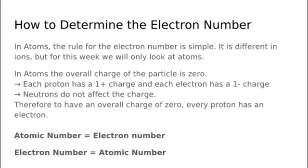In atoms, the rule for the electron number is simple. It is different in ions, but for this week we will only look at atoms. We know that in atoms the overall charge of the particle is zero. We know that each proton has a 1+ charge and each electron has a 1- charge, while neutrons do not affect the charge. Therefore to have an overall charge of zero, every proton must have an electron to balance it. So in atoms, atomic number equals electron number.